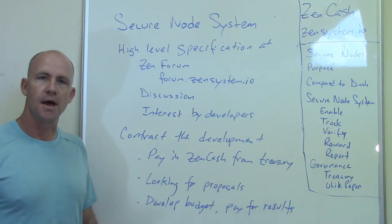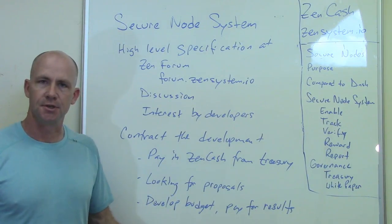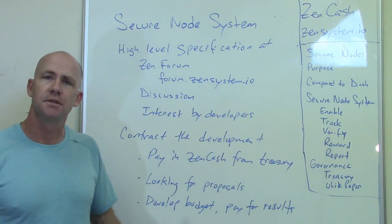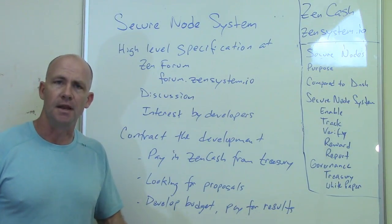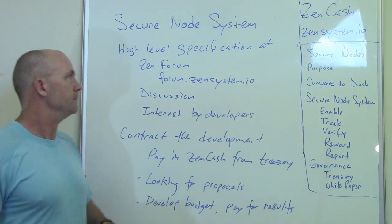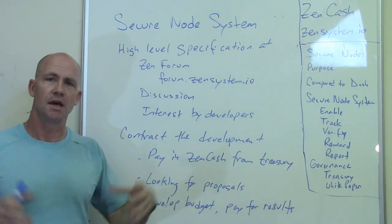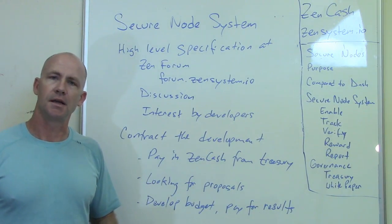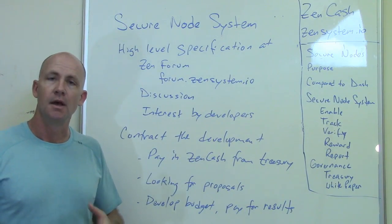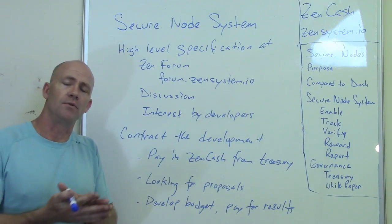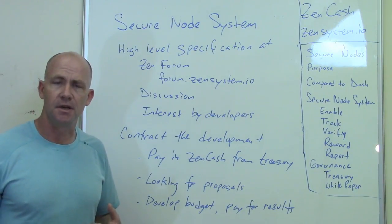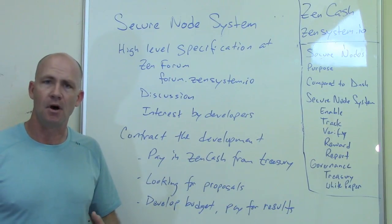The system we need to track and reward ZenCash secure nodes isn't just one piece of software — it's a system of applications and servers running together. It doesn't have to be very complicated, but it needs to be put together and operated. I've put together a high-level specification and system-level diagram of the way we're currently planning to have this work to get something up and going. Long-term, we want this in a distributed fashion, run by the secure nodes themselves.